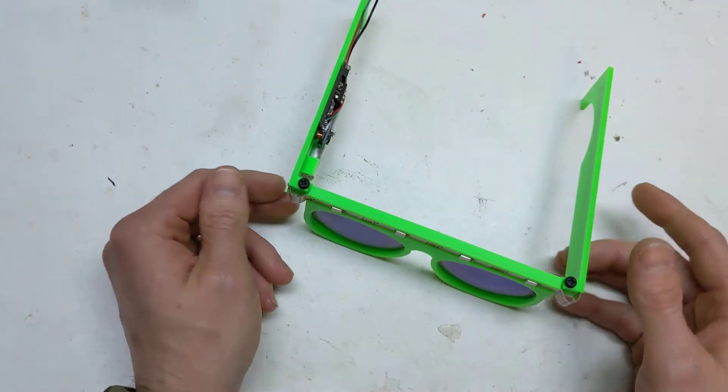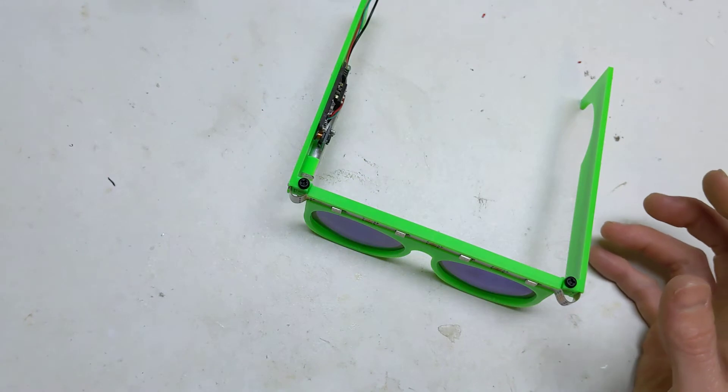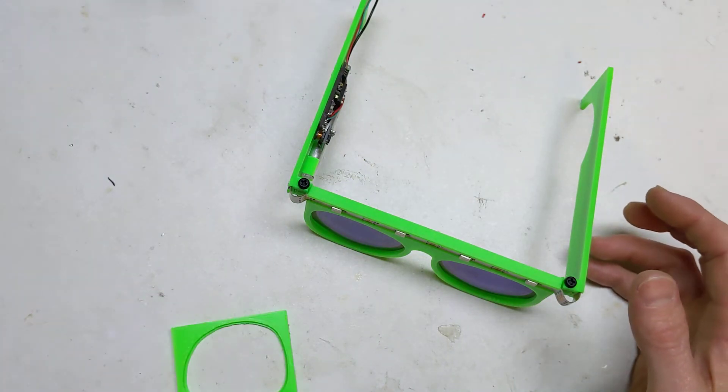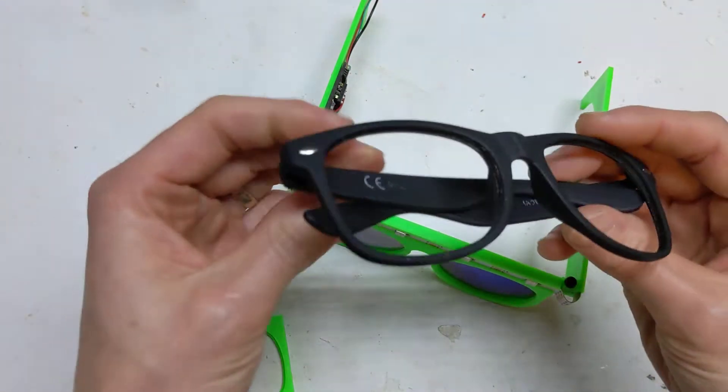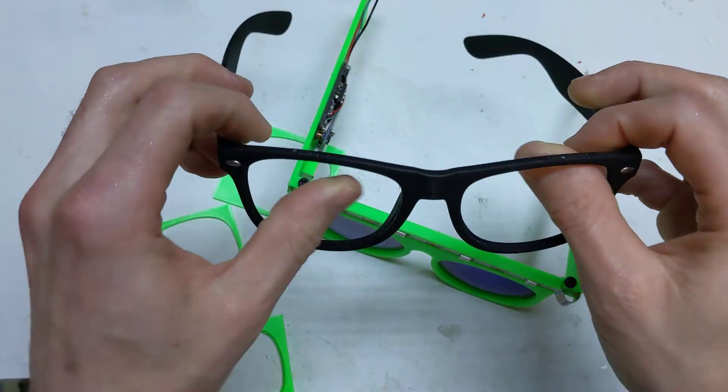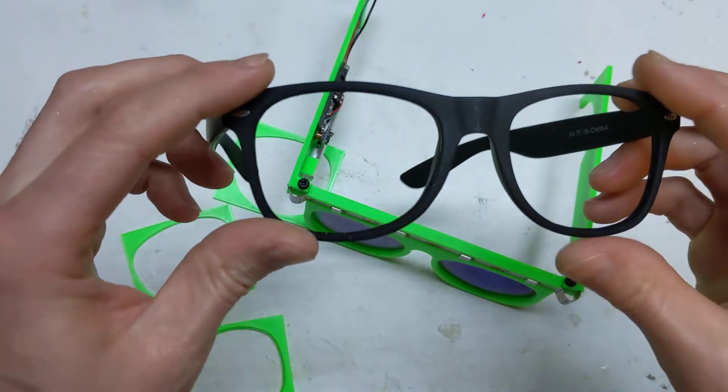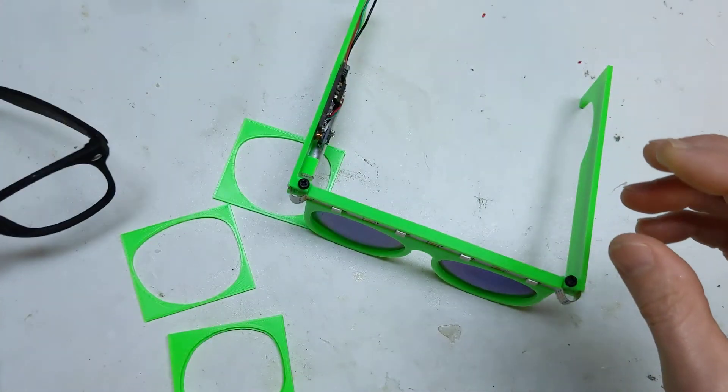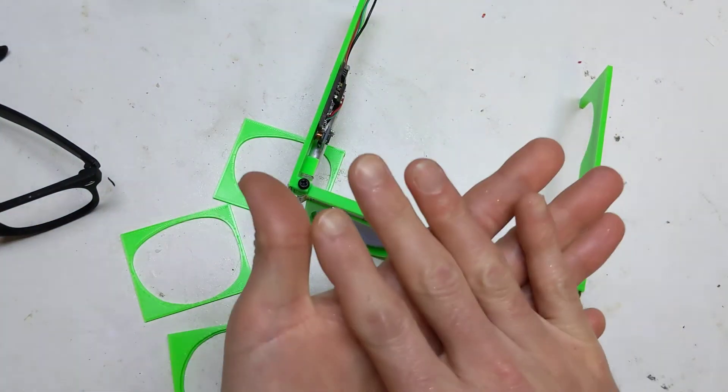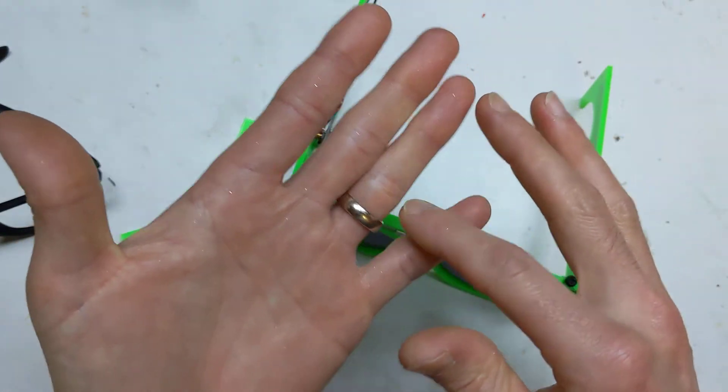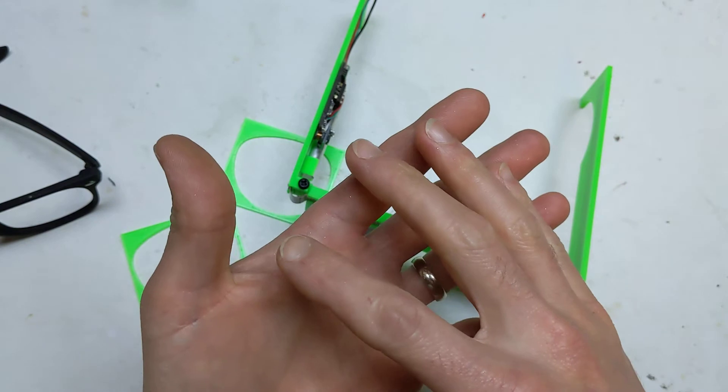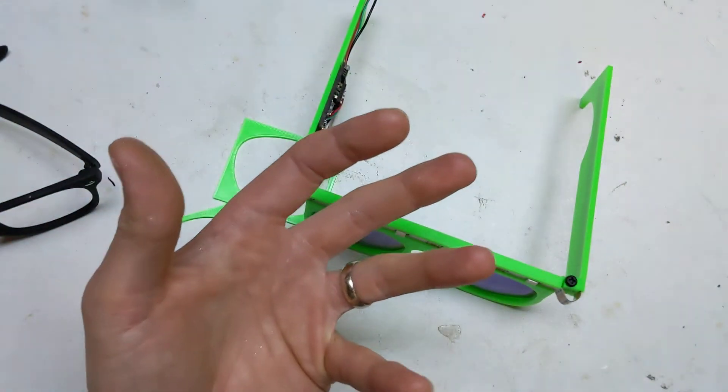The lenses were the make or break of this project. I took a pair of Primark sunglasses - literally a pound per pair - took the lenses out, photographed them on a high contrast white background, then used the magnetic trace tool in GIMP to get a rough outline and exported that.